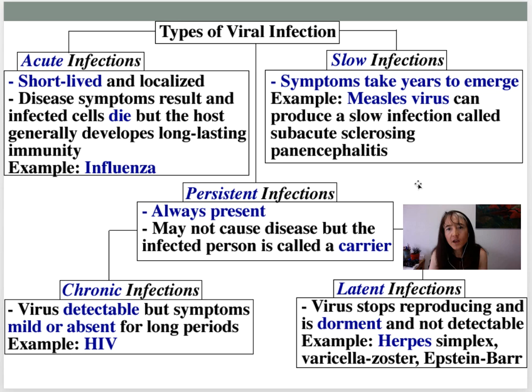Slow infections are very unusual. Sometimes a virus that typically causes an acute infection can, very rarely and in very few people, cause a terminal neurodegenerative disease called subacute sclerosing panencephalitis — and that's always fatal.